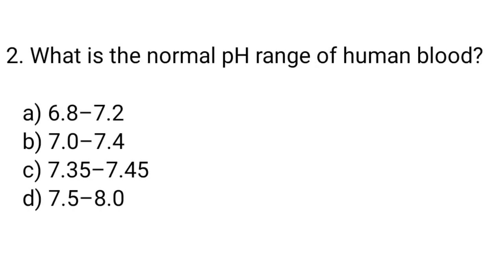Question 2. What is the normal pH range of human blood? The right answer is option C: 7.35 to 7.45.